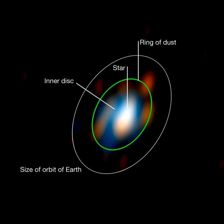An astronomical interferometer is an array of separate telescopes, mirror segments, or radio telescope antennas that work together as a single telescope to provide higher resolution images of astronomical objects such as stars, nebulas and galaxies by means of interferometry.